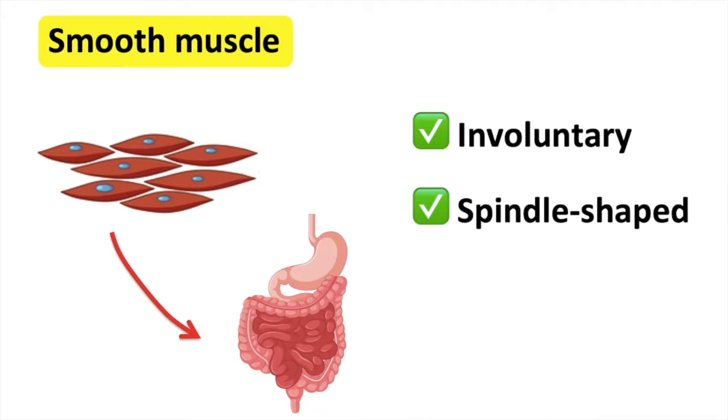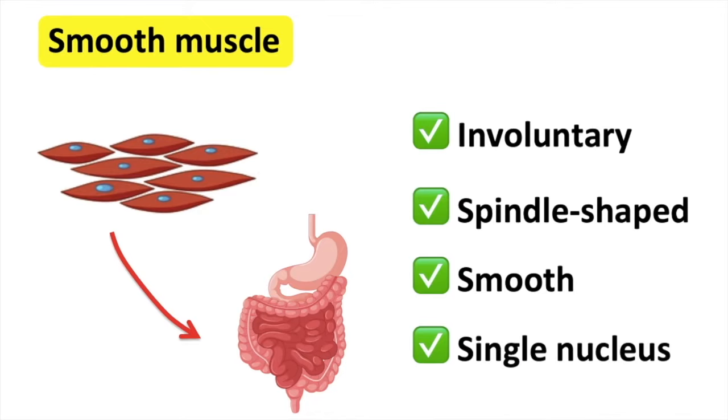This type of muscle is spindle-shaped, it's smooth, and it has a single nucleus in each fiber.